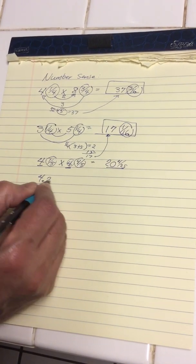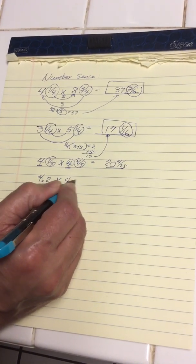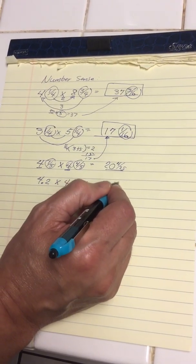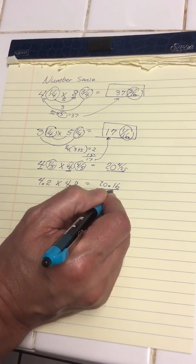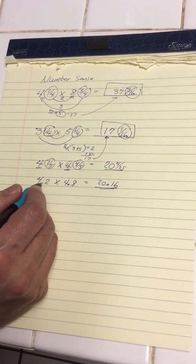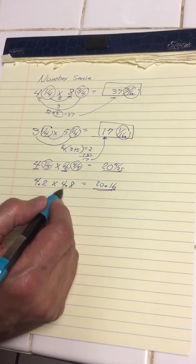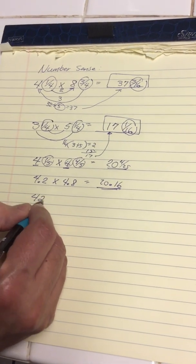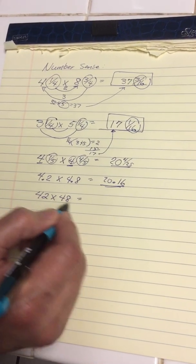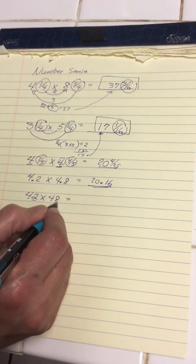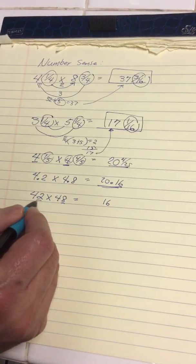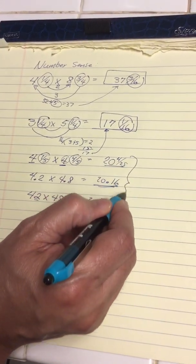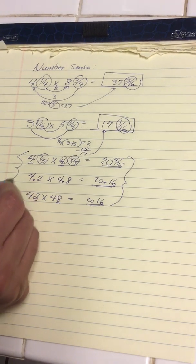This is very similar to 4.2 times 4.8: point two times point eight is point sixteen, and four times five is twenty — the same problem, because 4.2 is four and one-fifth and 4.8 is four and four-fifths. This also leads to 42 times 48: two times eight is sixteen, four times five is twenty, so these last three examples are actually the same problem.